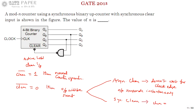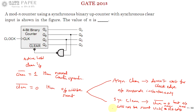In the case of synchronous clear, even though clear bar is zero, the output will not be reset until the next clock edge arrives. This is the key difference: asynchronous clear doesn't wait for the clock edge, but synchronous clear will wait for the clock edge to clear the flip-flop outputs.